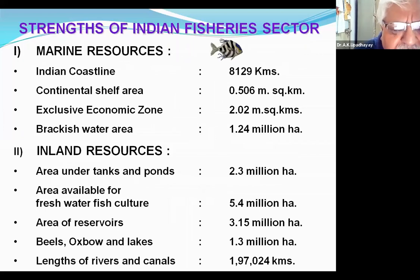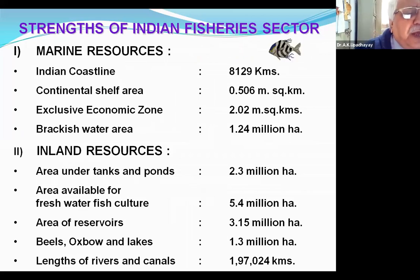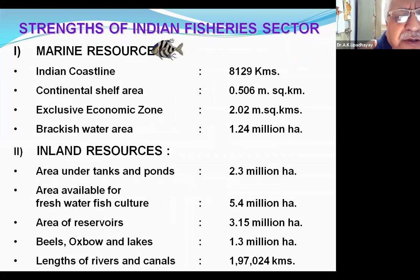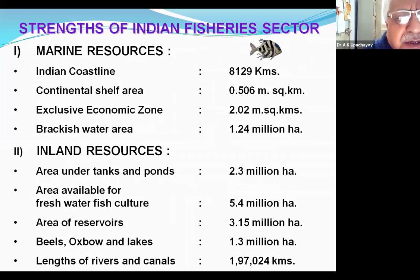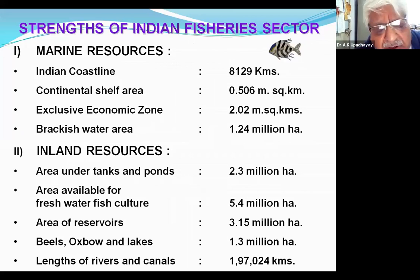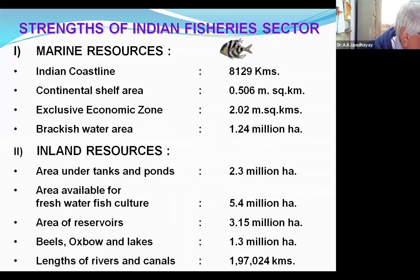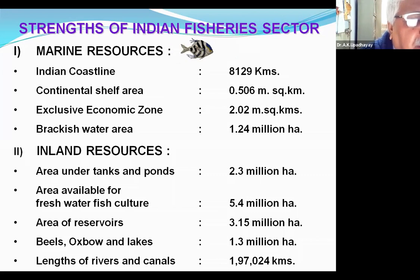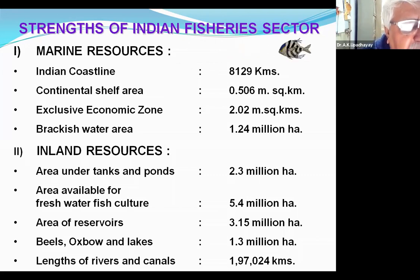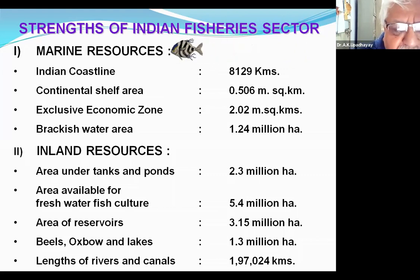What strength does India derive from its very comprehensive aqueous resource? Your country is very gifted. The Indian coastline is 8,129 kilometers, continental shelf area 0.506 million square kilometers. After the declaration of the EEZ and its adoption by Parliament in 1976, we increased our sphere into offshore fishing, with a total EEZ area of 2.02 million square kilometers. The brackish water area is 1.24 million hectares. Inland resource area under tanks and ponds is 2.3 million hectares, the area available for freshwater fish culture is 5.4 million hectares, and the area of reservoirs is 3.15 million hectares.